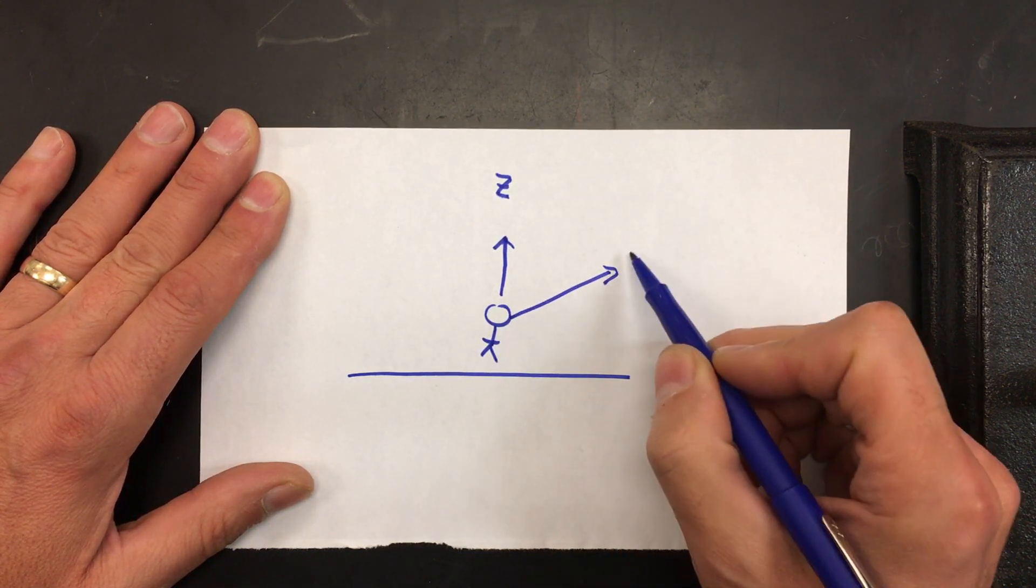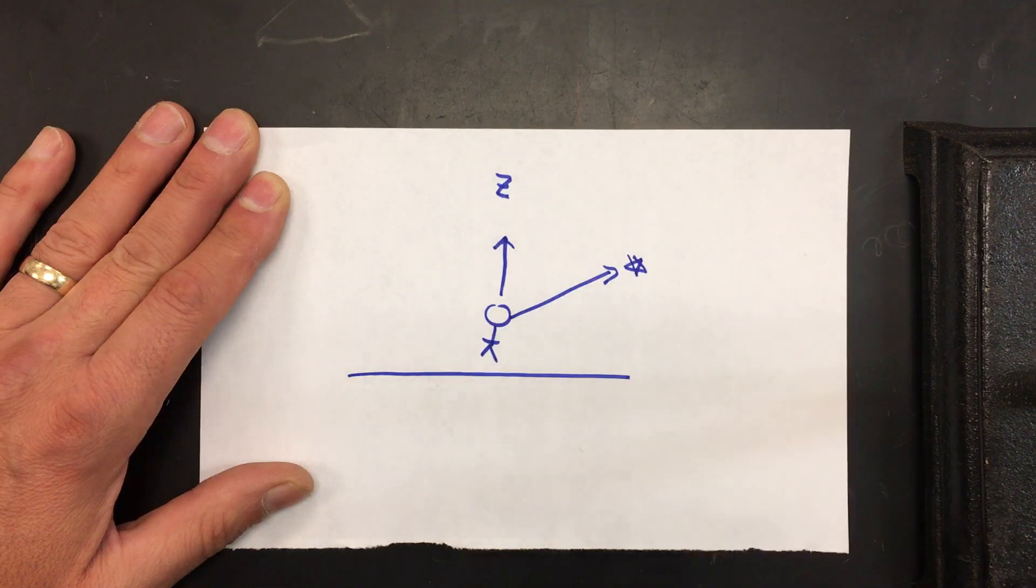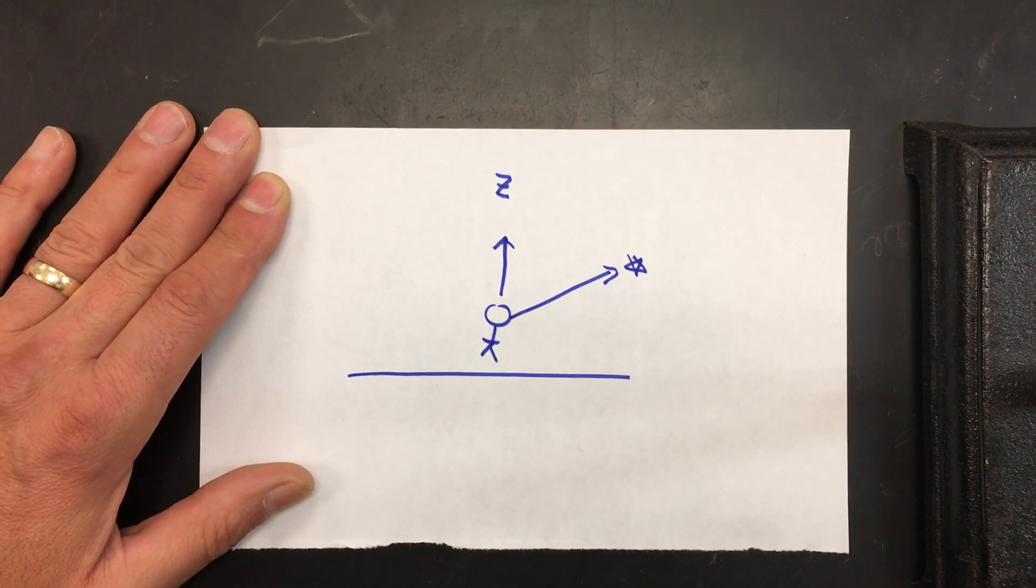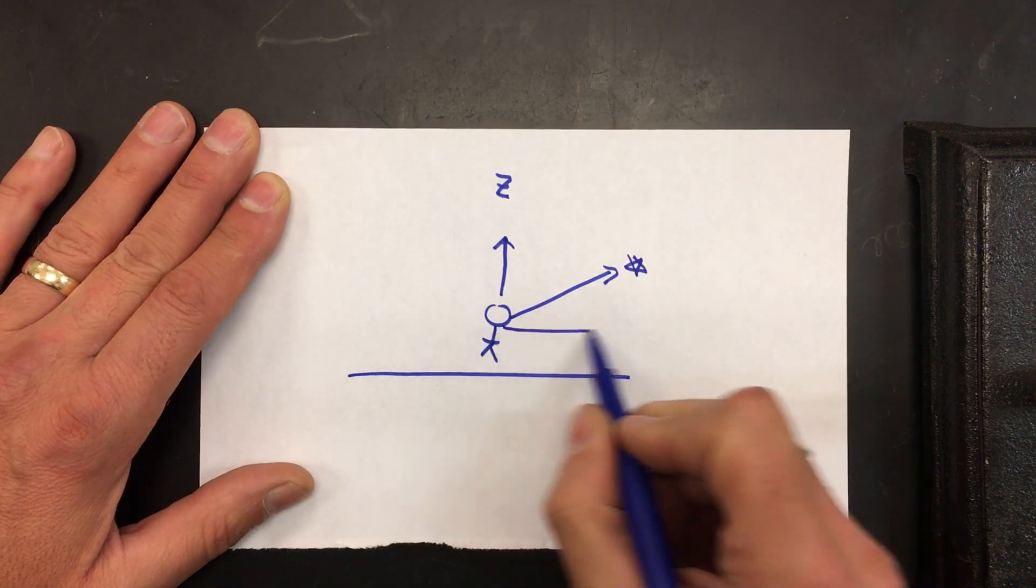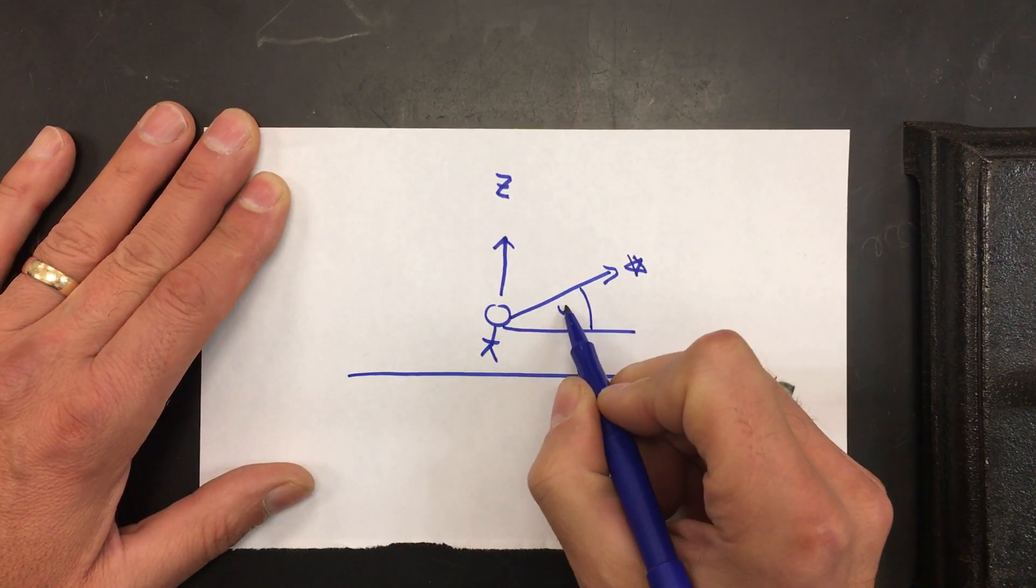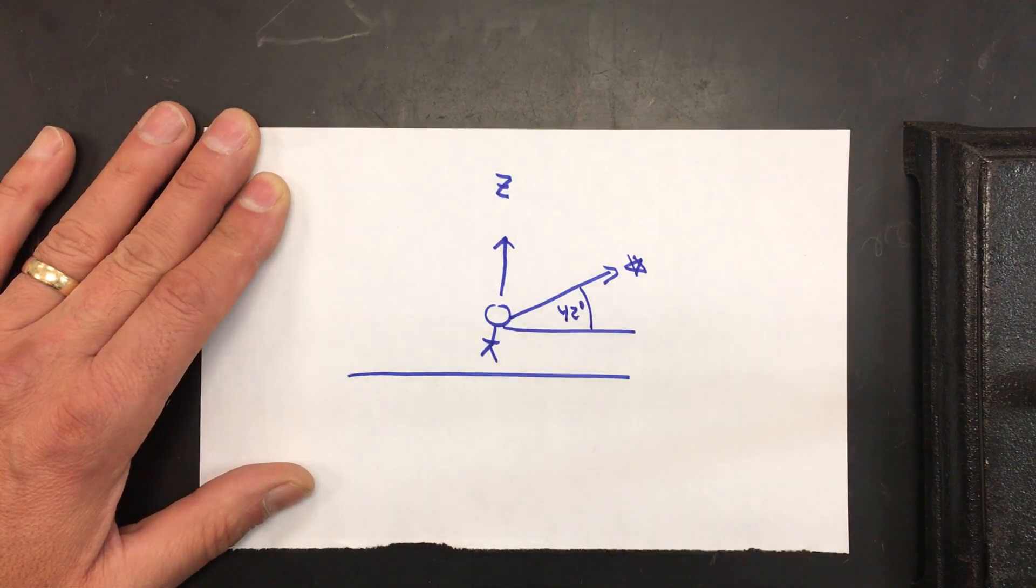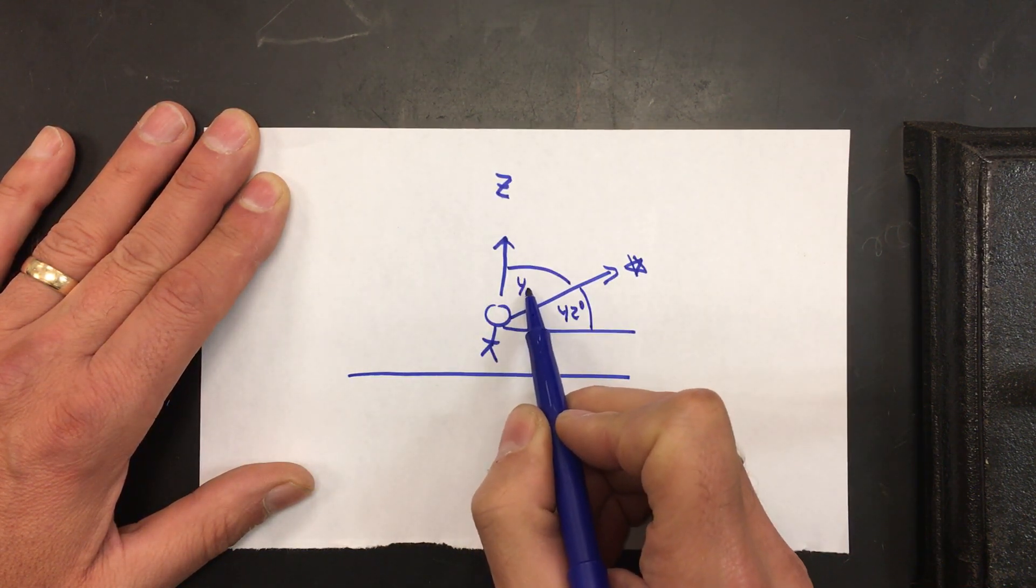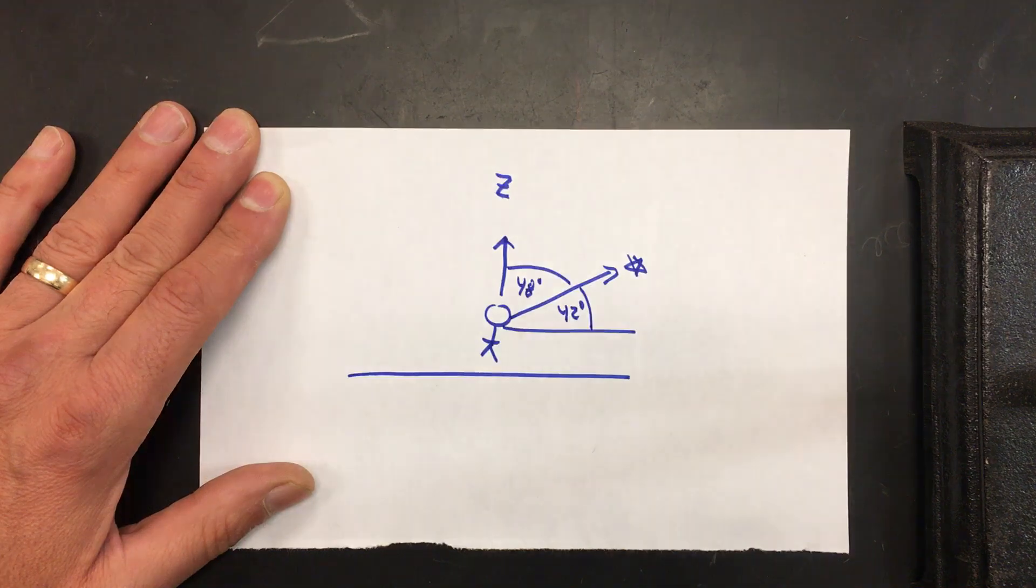If you might remember, if you look towards Polaris, the altitude of Polaris is your latitude. Here in Chicago that would be 42 degrees, which means the zenith must be 48 degrees from Polaris.